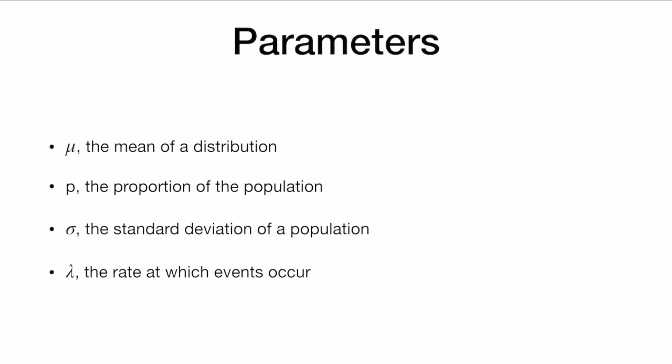Some examples of parameters are mu, the mean of a distribution; p, the proportion of the population that meets some criteria; sigma, the standard deviation of a population; or lambda, the rate at which events occur. And we have many other parameters that we might encounter in statistics.